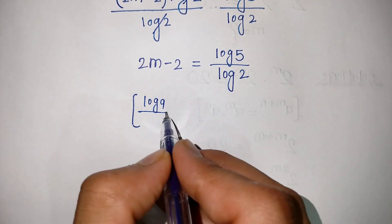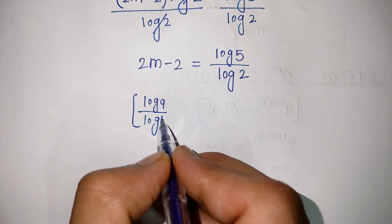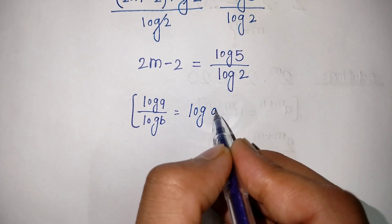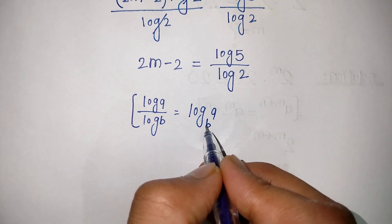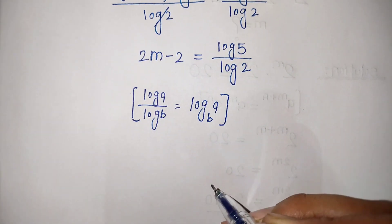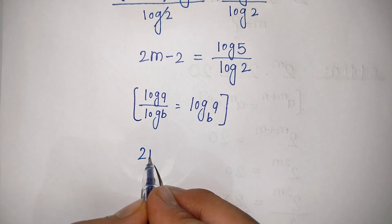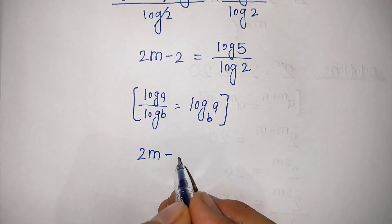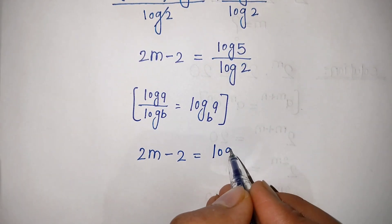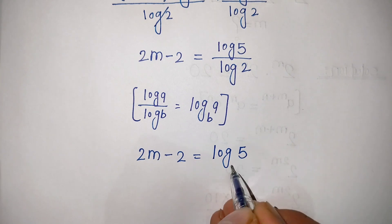Now we know the log rule that log of a divided by log of b is equal to log of a base b. By applying this rule we can write 2m minus 2 is equal to log of 5 base 2.